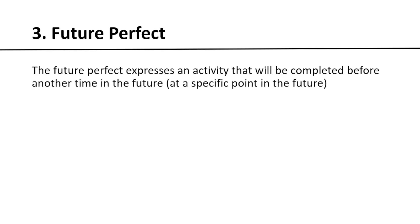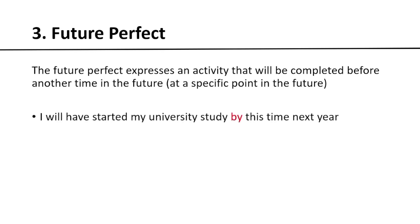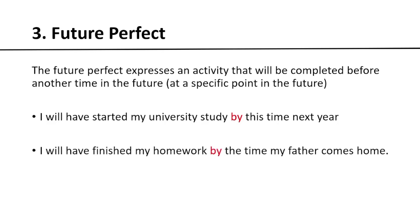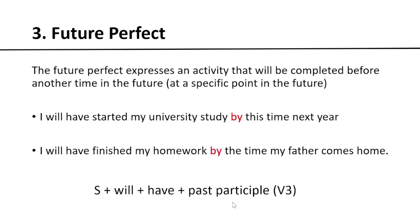Now let's continue to the third tense: future perfect. What is future perfect? The future perfect expresses an activity that will be completed before another specific time or point in the future. Examples: 'I will have started my university study by this time next year.' 'I will have finished my homework by the time my father comes home.' The form is: subject + will + have + past participle.